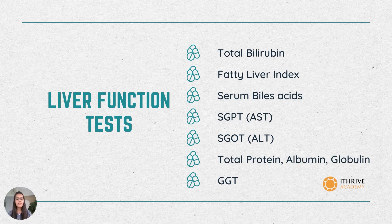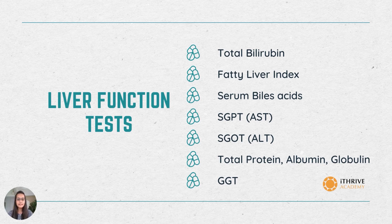So if the liver is not functioning, the total bilirubin levels may rise. Next is fatty liver index, which is a measure of the fat being accumulated in your liver cells. If fat gets accumulated in your liver cells, your liver becomes dysfunctional — that is what fatty liver disease actually means. You can measure your risk of a fatty liver using this test named fatty liver index.